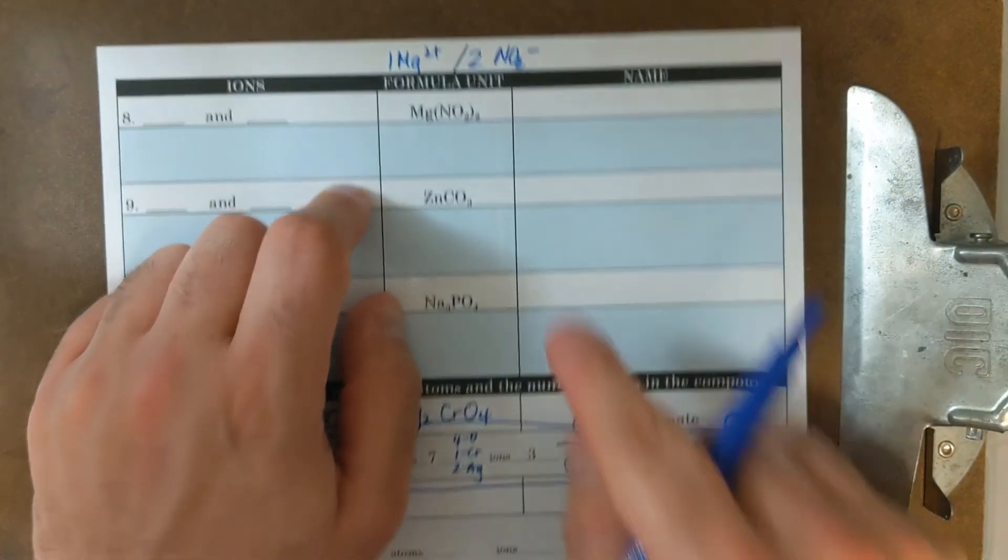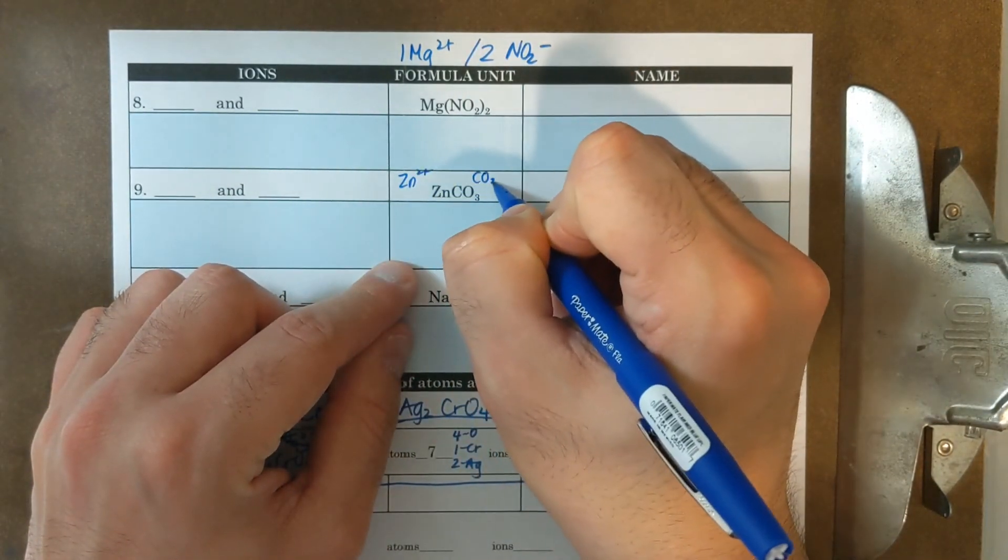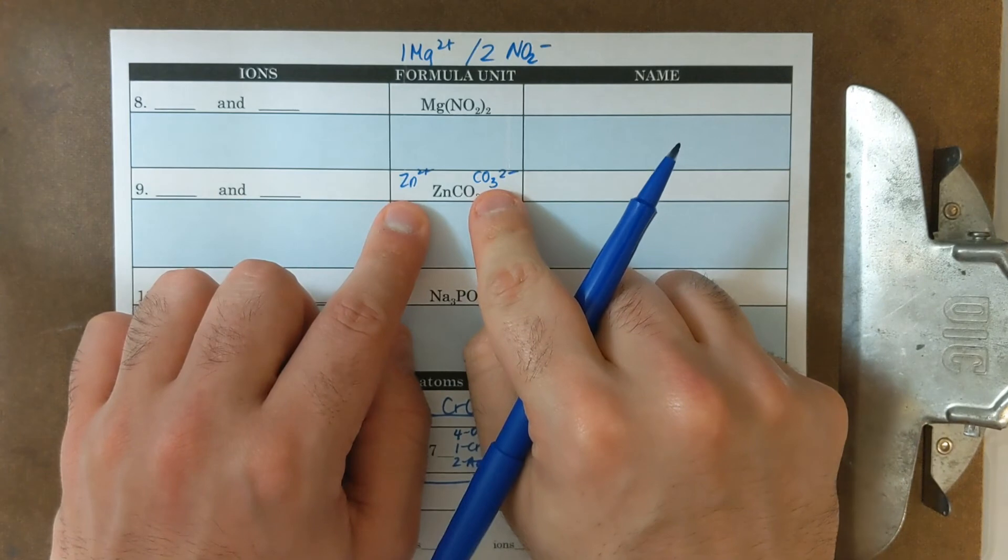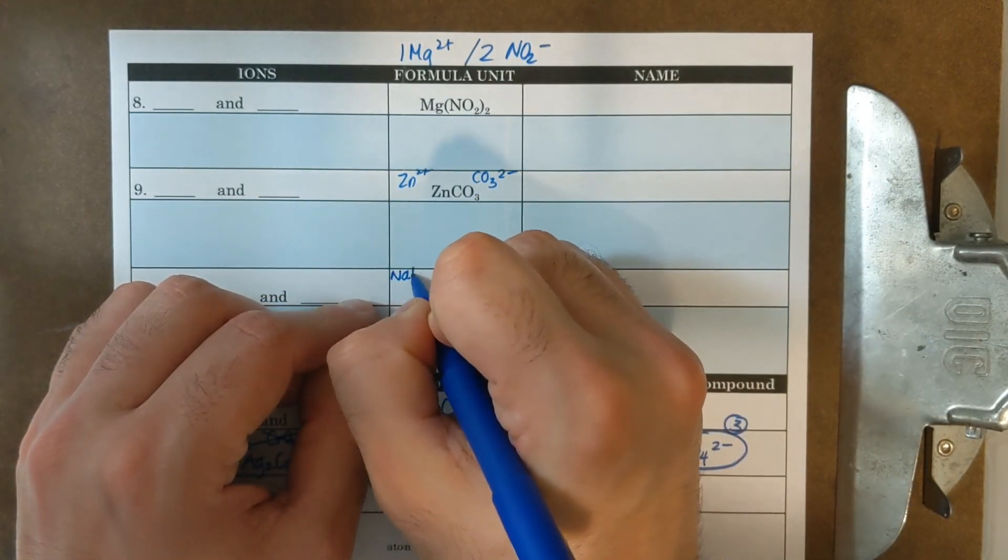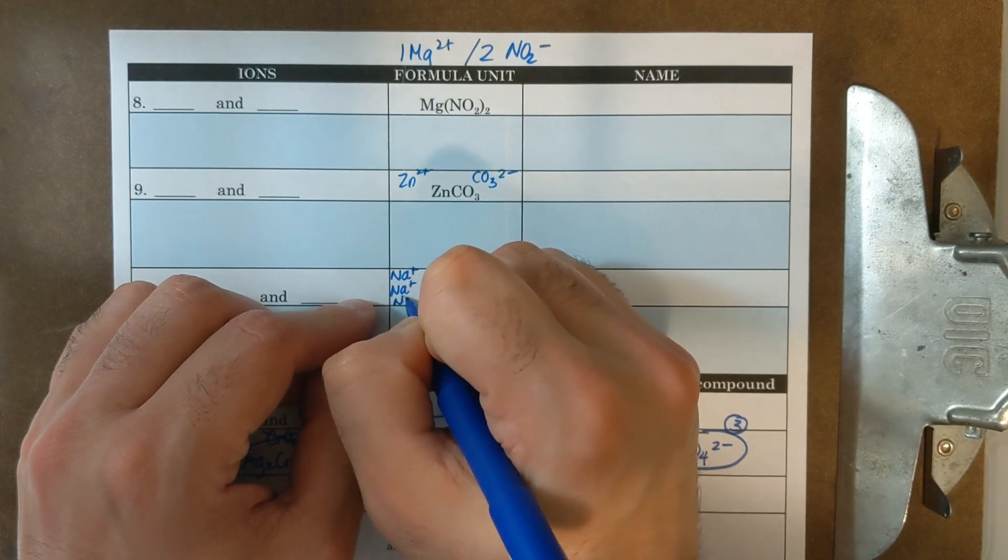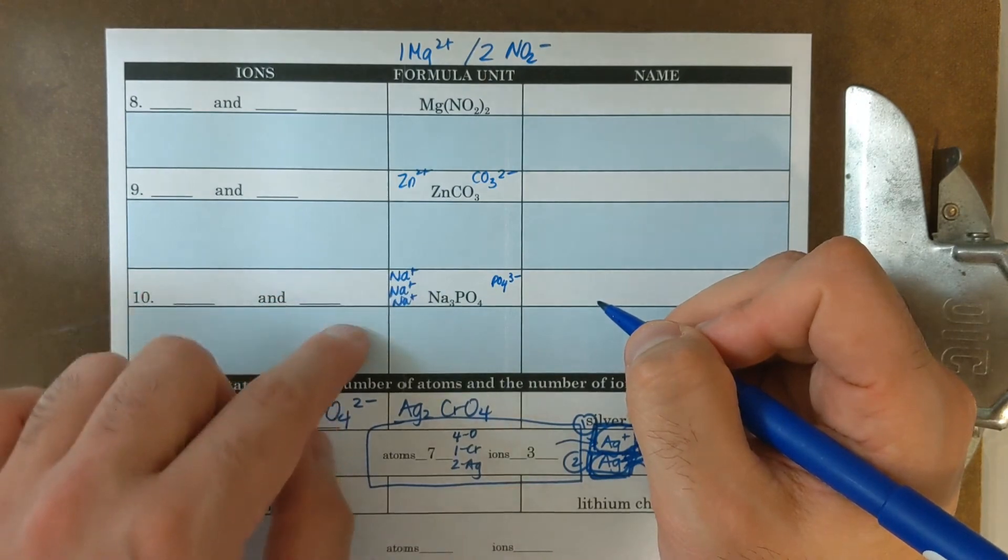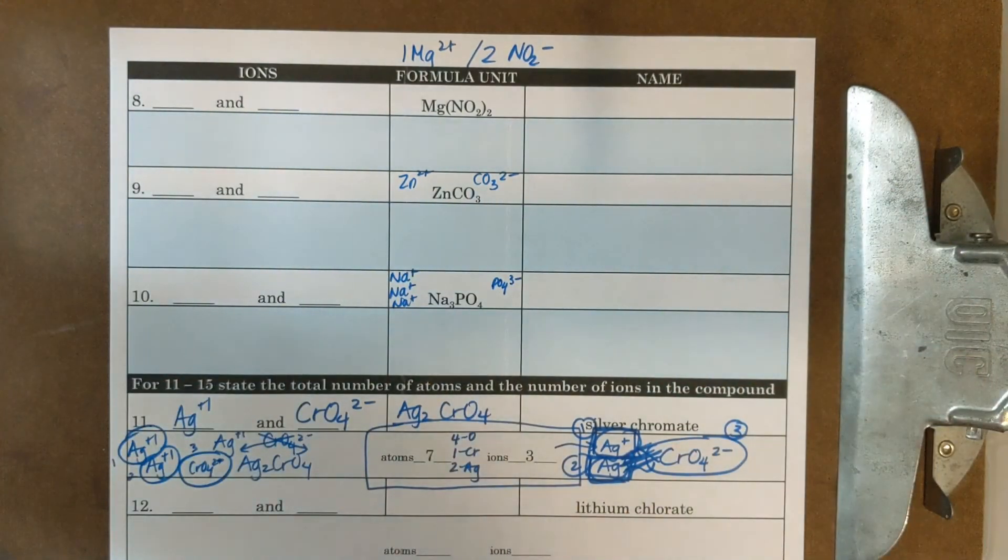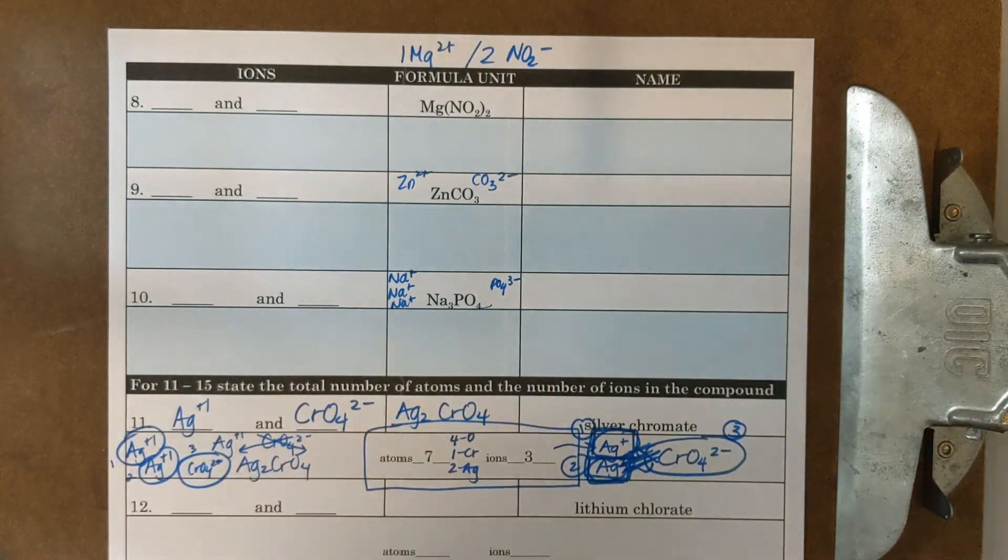So this would have one Mg two plus and two NO2 minuses. So this is three ions. This one is Zn two plus and CO3 two minus. Those are just two ions. And then this one has three NA pluses and one PO4 three minus. This has one, two, three, four ions in total. But counting the atoms, I count all of the subscripts altogether.